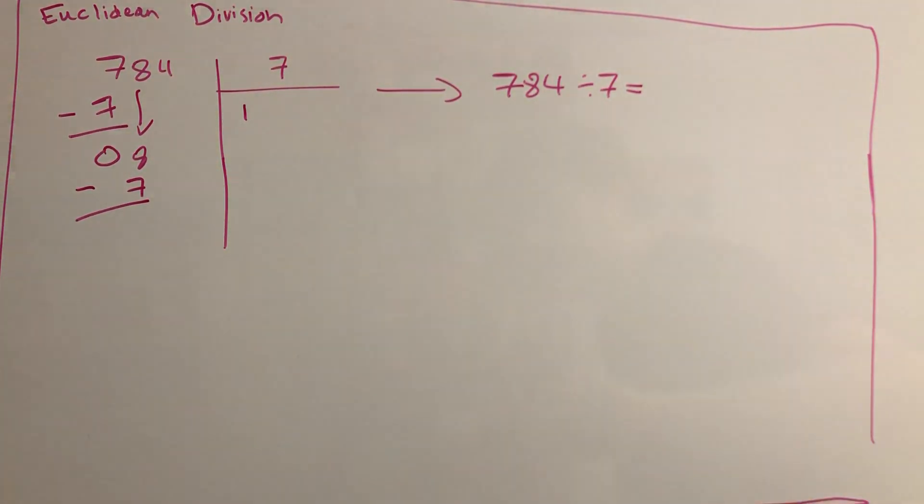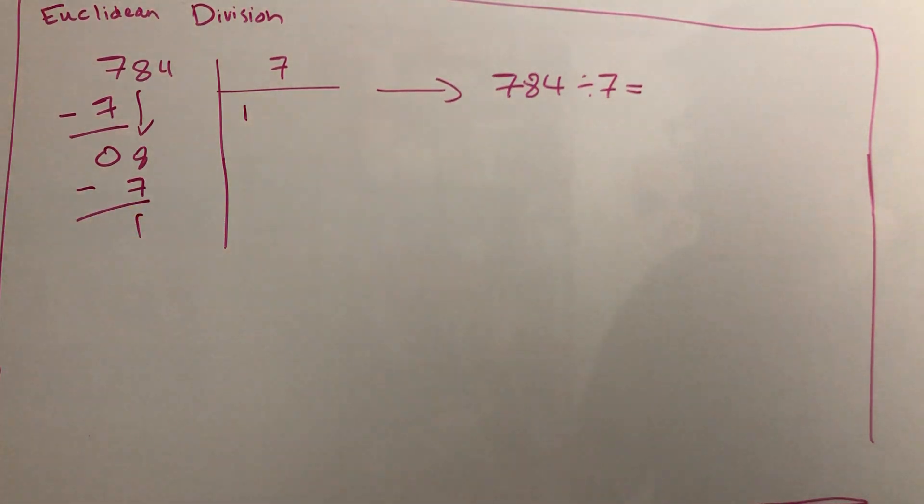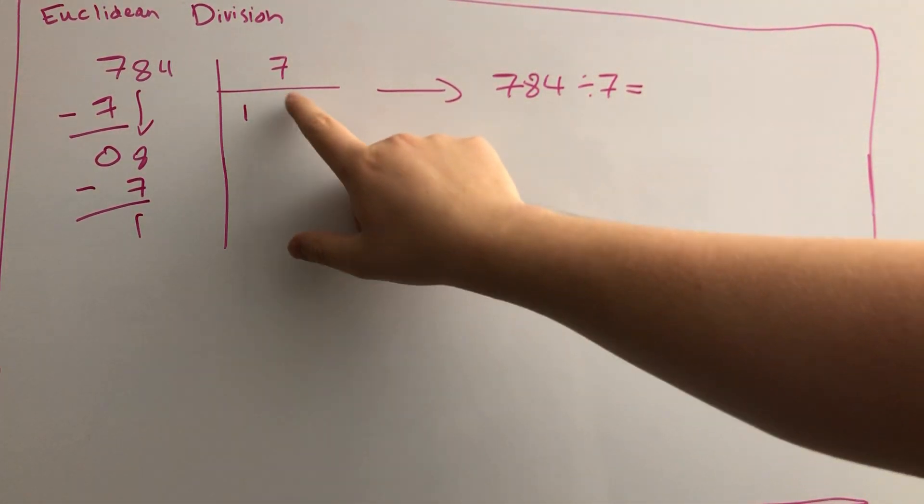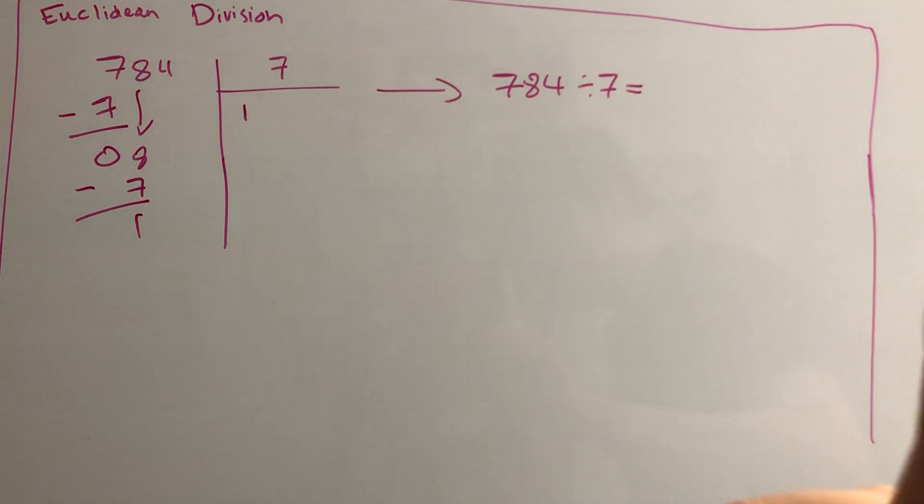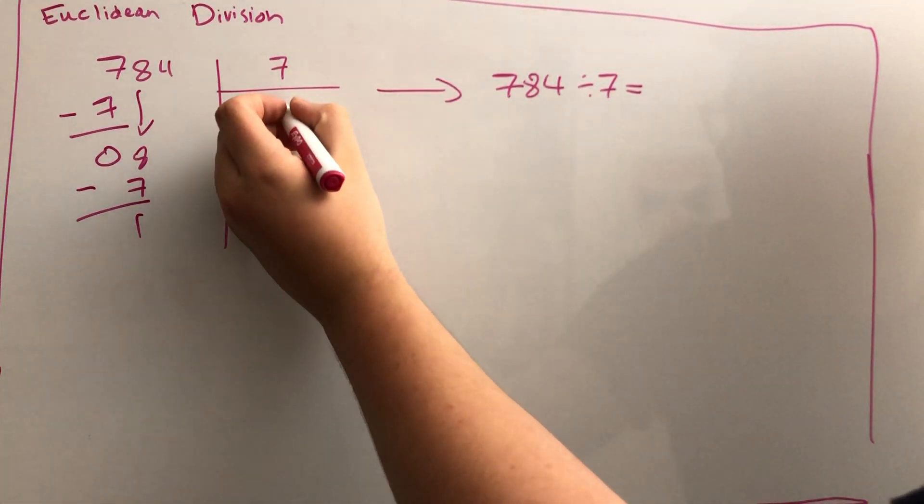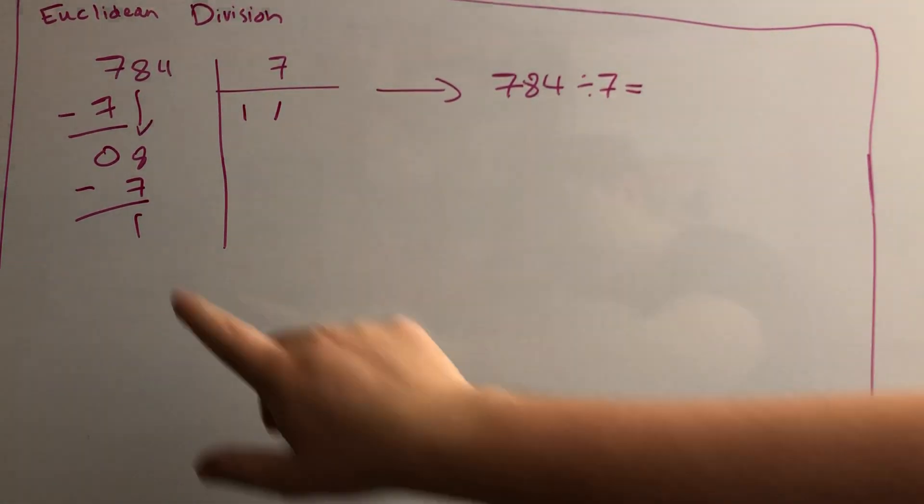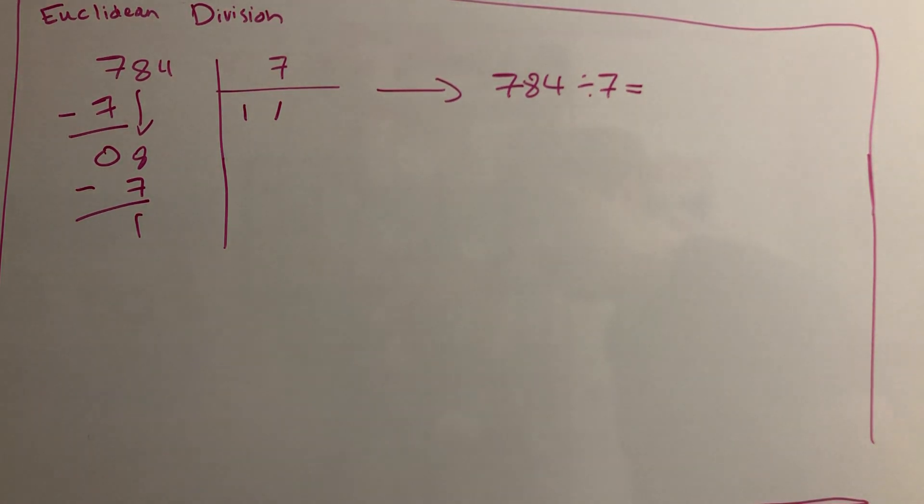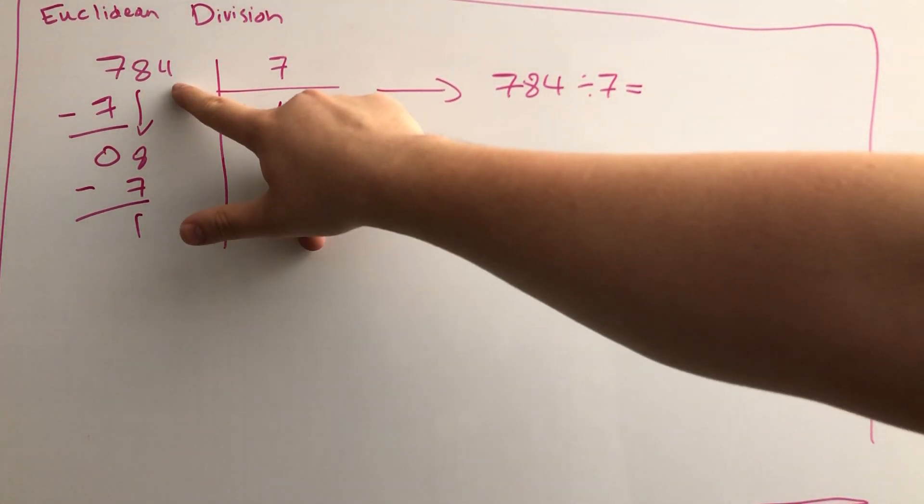You do the subtraction again and get 1. Since we said that 7 goes into 8 once, we have to write down 1 again. This time we have 1, and then we bring down the final digit, which is 4.